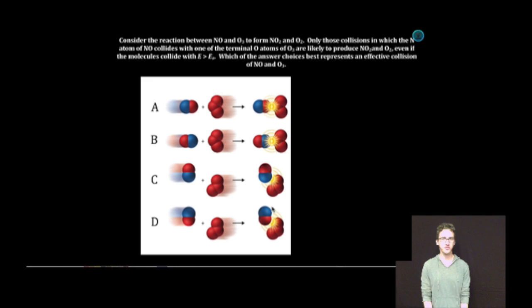Consider the reaction between nitrogen monoxide and ozone to form NO2 and oxygen. Only those collisions in which the N atom of NO collides with one of the terminal O atoms of ozone are likely to produce NO2 and O2, even if the molecules collide with an energy that's greater than the activation energy.